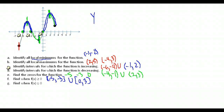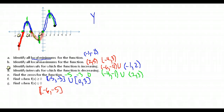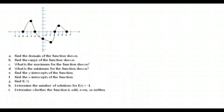Finally, find where f(x) is less than or equal to zero — where the y-values are below zero. That happens at the beginning from x = -6 to x = -5, and then again from x = -3 to x = 0. So those are our two intervals where f(x) ≤ 0. This covers all the different things we can determine from a function graph.